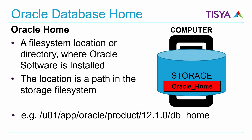For an Oracle database, we install the binaries or the software in a directory path. Such a directory path in the computer is referred to as the Oracle Home. Different software products can be installed in different homes. In the current context of discussion, we are looking at a database home where the database software is installed.